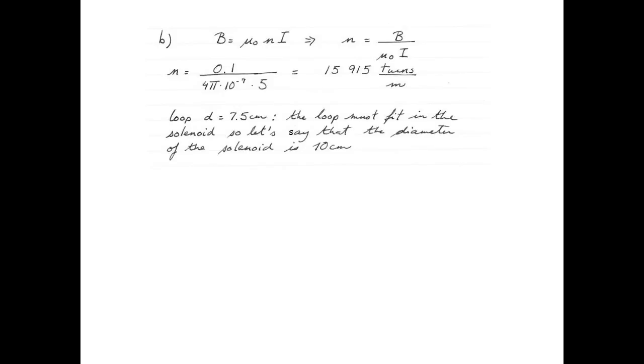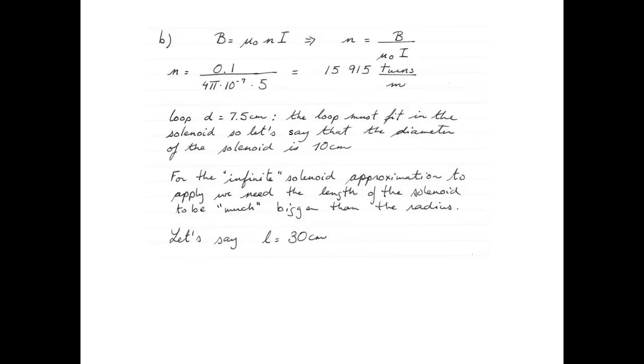Now my loop has a diameter of 7.5 centimeters, and that loop has to fit into the solenoid. So let's say that the diameter of my solenoid is 10 centimeters. For the infinite solenoid approximation to apply, I need the length of the solenoid to be much bigger than the radius. So the radius of my solenoid is 5 centimeters. I can make the length of my solenoid 30 centimeters.